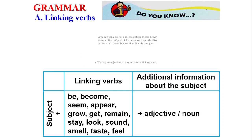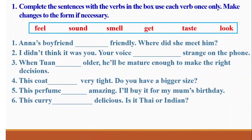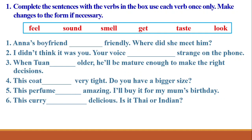Alright, now let's do the exercise. Complete the sentences with the verb in the box. Use each verb once only. Make changes to the form if necessary. Complete the sentences with the words given in the box. Number one: we have the word 'boyfriend' and 'friendly.' Anna's boyfriend is friendly — does he feel friendly, smell friendly, or taste friendly? We need to choose the correct linking verb.